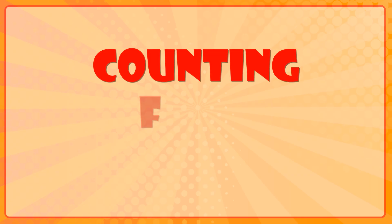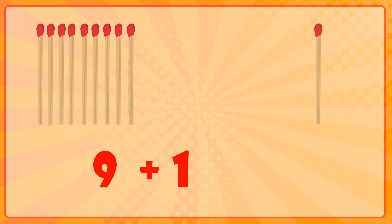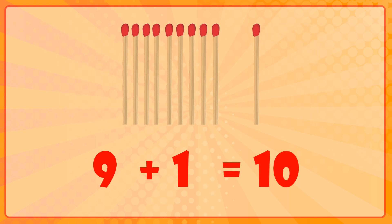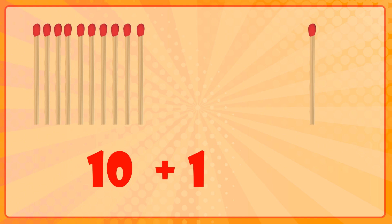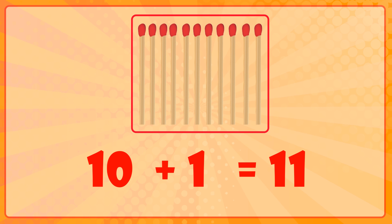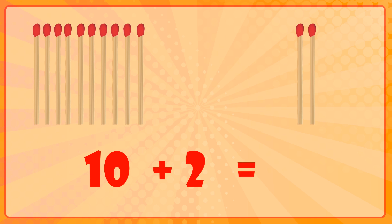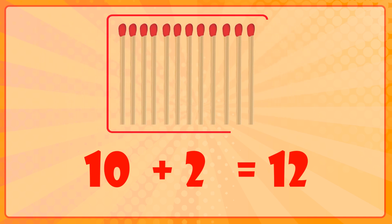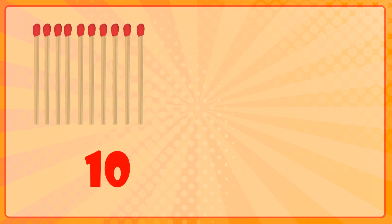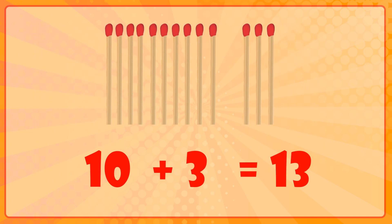Counting from 10 to 20. 9 matchsticks plus 1 matchstick is equal to 10 matchsticks. 10 matchsticks plus 1 matchstick is equal to 11 matchsticks. 10 matchsticks plus 2 matchsticks is equal to 12 matchsticks.